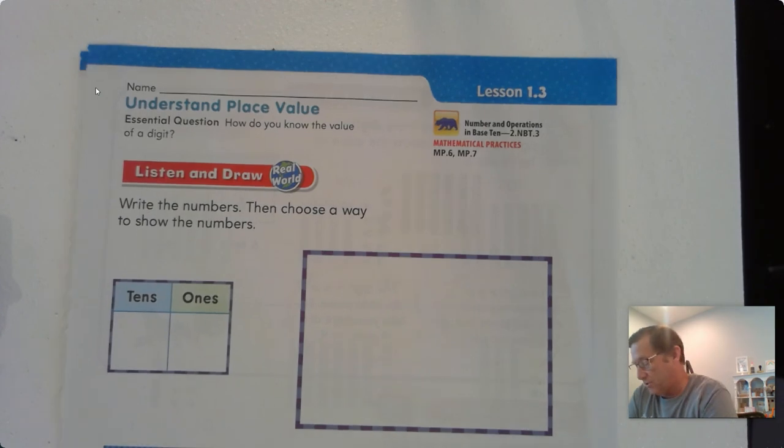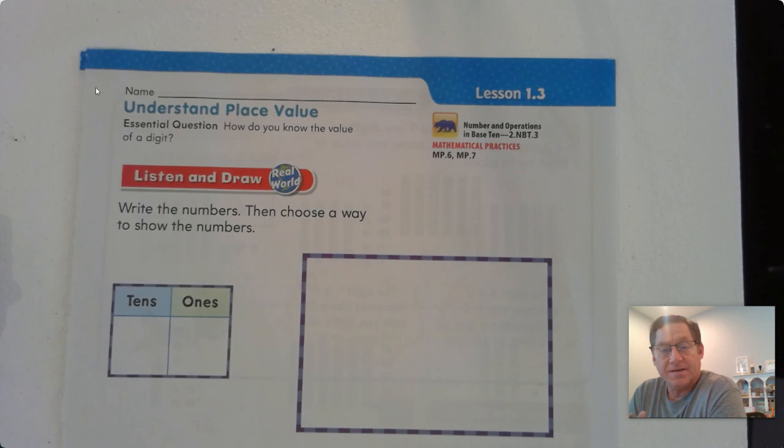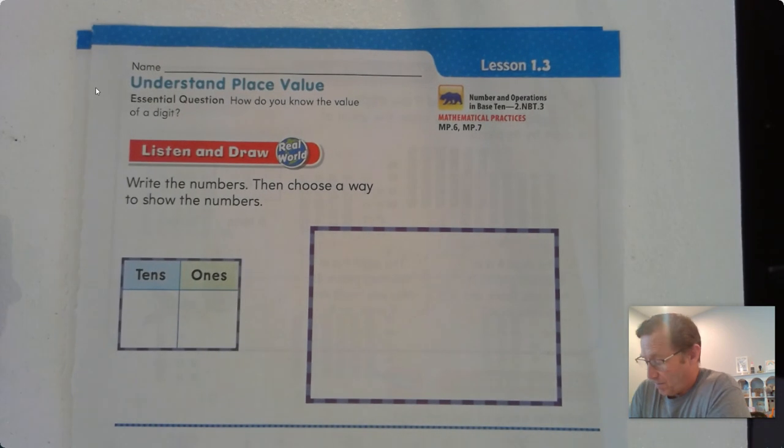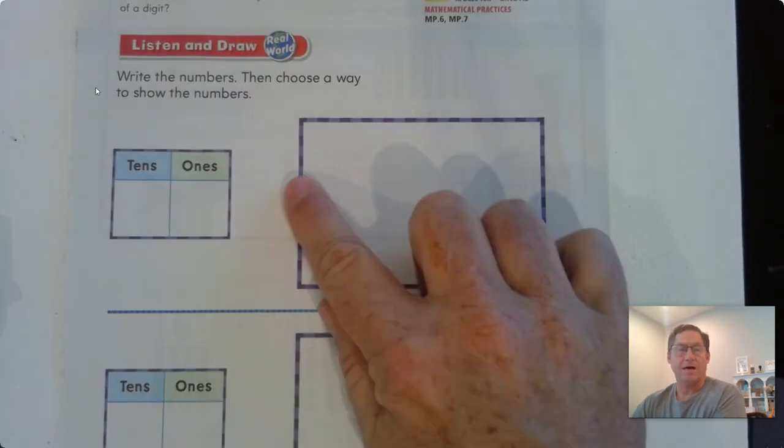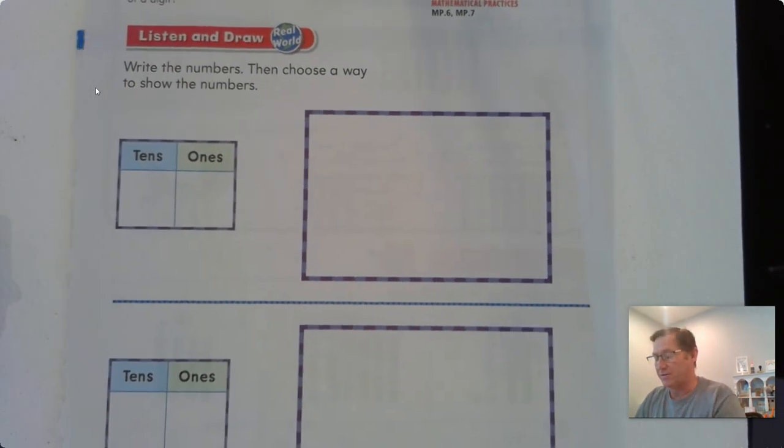So listen, and I want you to draw this following scenario. Pause the video after I've read this scenario so that you can independently do your work. Gabriel collects baseball cards. The number of cards that he has is written with a 2 and a 5. How many cards might he have? Go ahead and pause the video and fill in the top part and the bottom part. There's two possibilities.